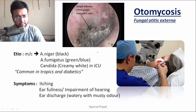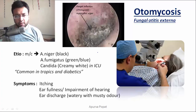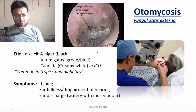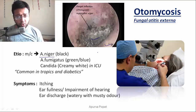Otomycosis, or fungal otitis externa, is the fungal infection of the external ear. The tympanic membrane and the external auditory canal are mainly affected. The most common organism causing otomycosis is Aspergillus niger, which on otoscopic examination shows black colonies on the tympanic membrane and external auditory canal.